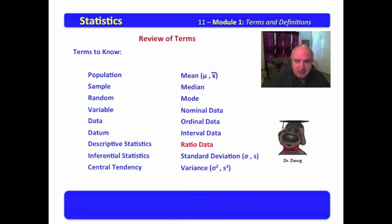This means that they can be ranked and compared. Standard deviation, the average distance from the mean, in the population represented by sigma, and in the sample represented by s.